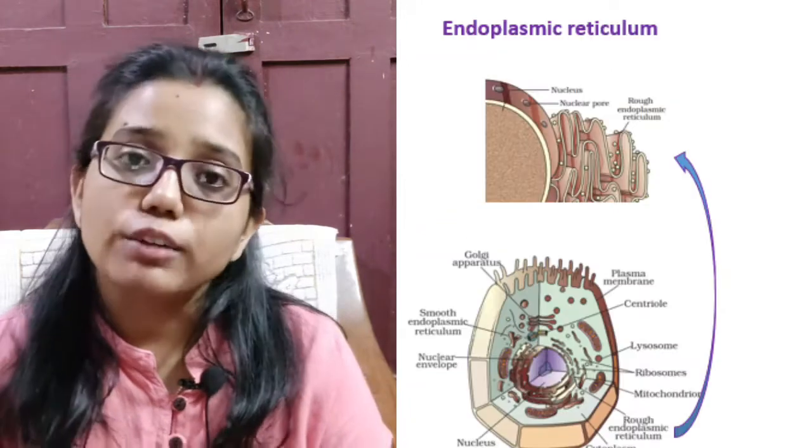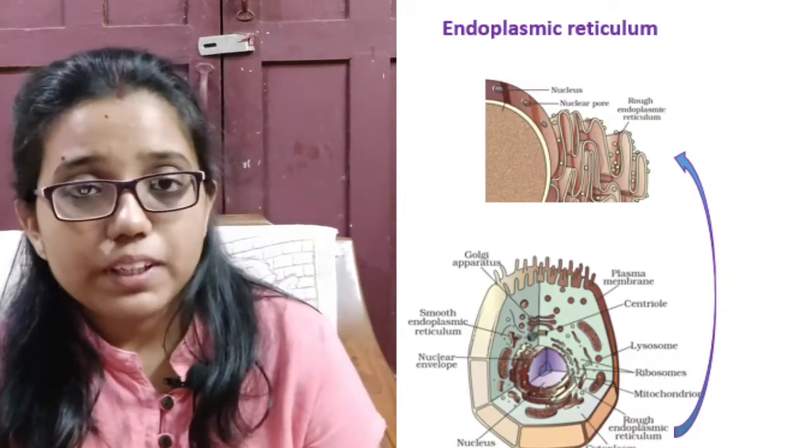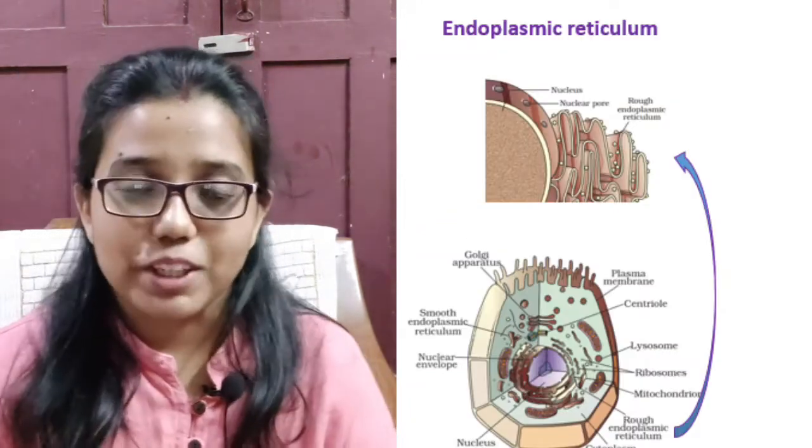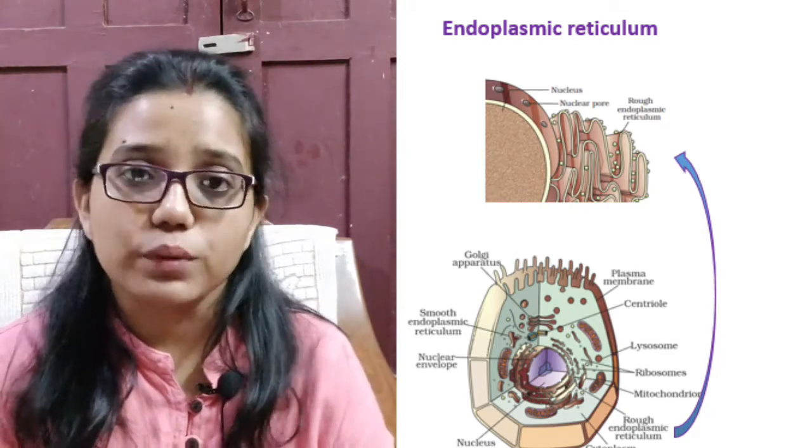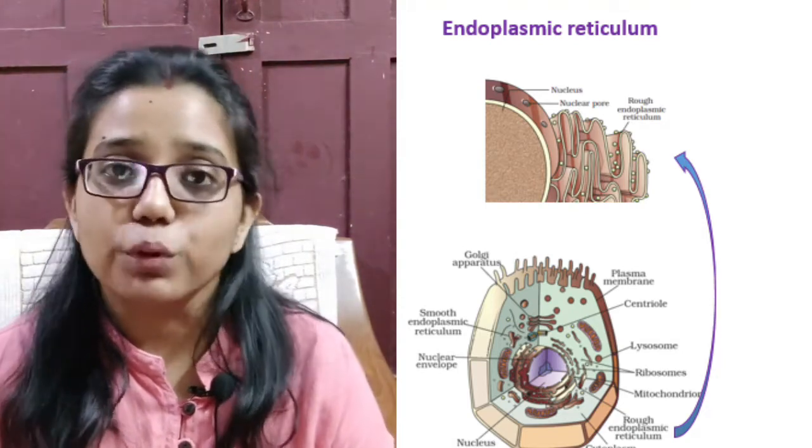Now, endoplasmic reticulum are of two types: rough endoplasmic reticulum and smooth endoplasmic reticulum. Rough endoplasmic reticulum have ribosomes attached to its surface and it helps in protein manufacture.